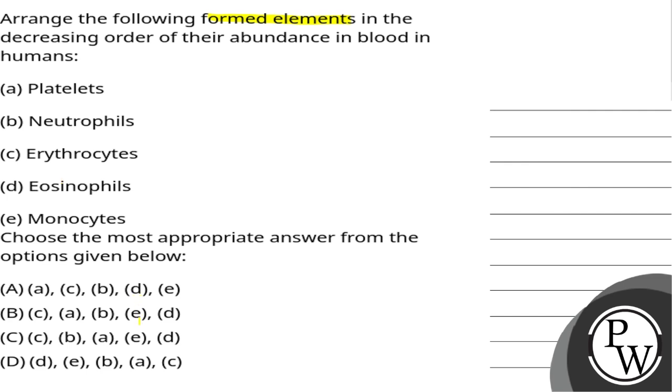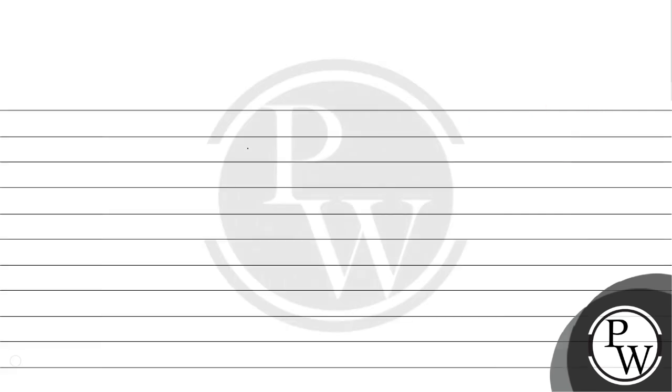So firstly, see the key concept for this question. Here we are going to discuss the formed elements of blood. We are talking about formed elements of blood. In the formed elements, different types of cells are present. If we talk about it, there are mainly three types of cells.